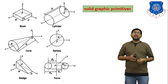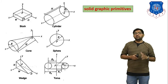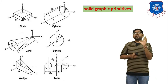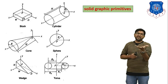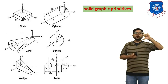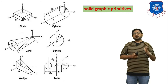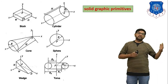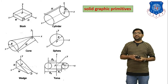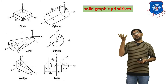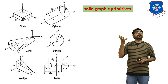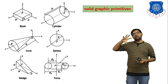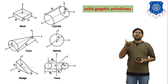The third primitive is the cone. To generate a cone, you have to give as input data the base radius and the height of the cone. Based on that, you can generate a cone in the modeling software. The next primitive is the sphere. For a sphere, the only required input value is the radius. If you give the value of the radius, the software automatically generates one sphere.